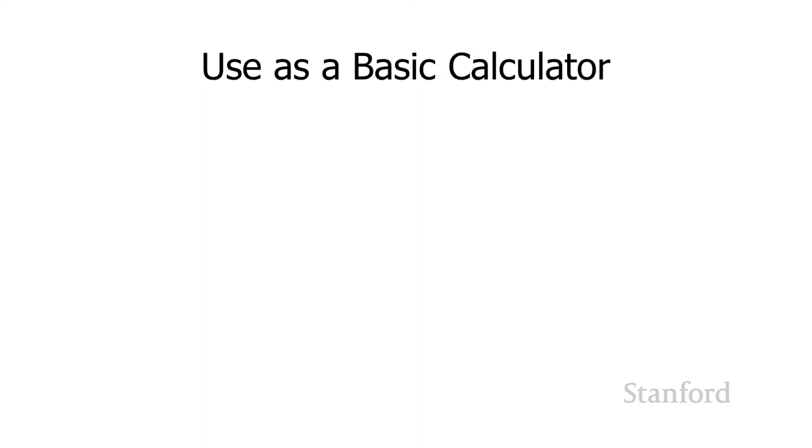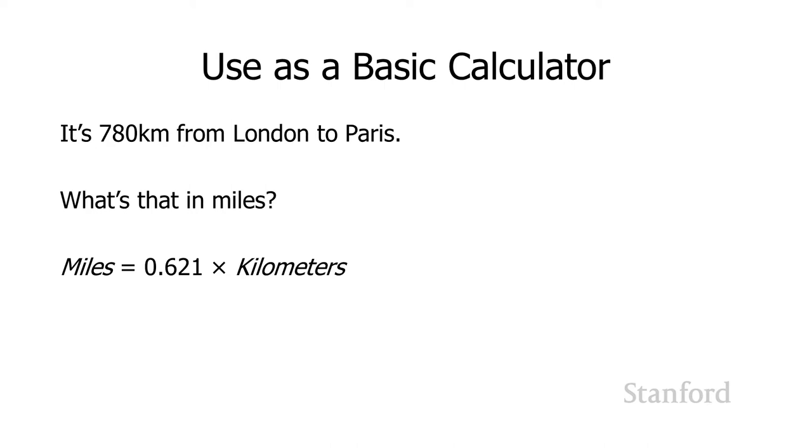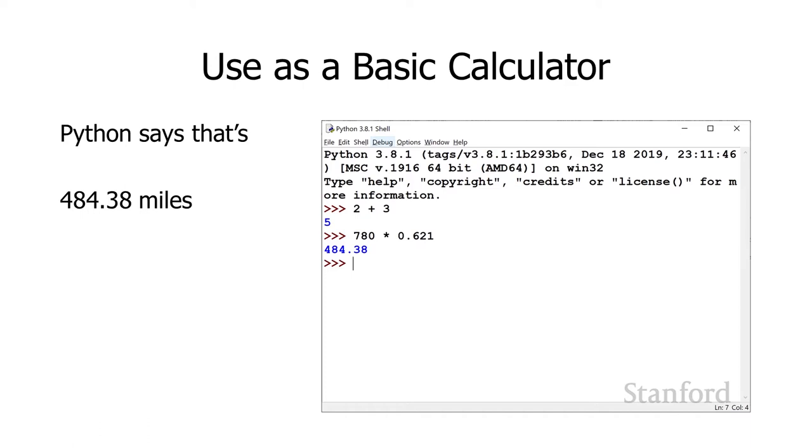If I know that Paris and London are 780 kilometers apart and I want to know what that is in miles, here's the formula: miles equals 0.621 times kilometers. I can ask Python 780 times 0.621. In computer science, we usually use the asterisk in place of the multiplication sign. Python replies that it's 484.38 miles.